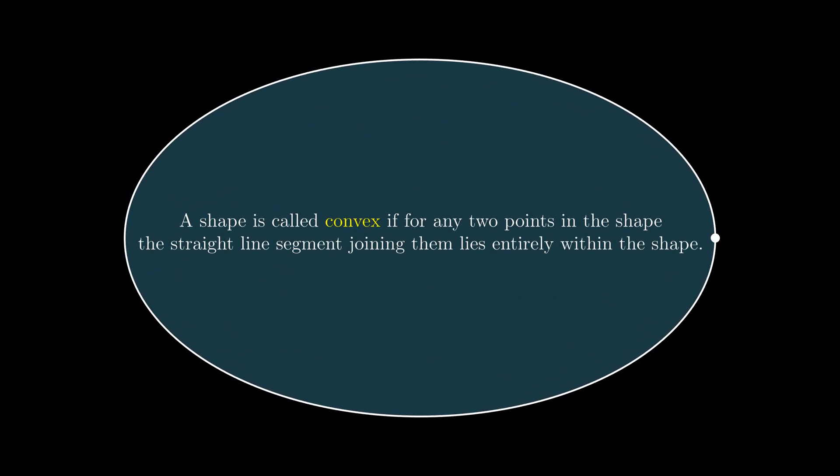Let's suppose that some closed curve of a fixed length encloses a region with the largest area. Try to understand how this plane figure works. Before asking the first question, I will remind you of the definition. A shape is called convex if, for any two points in the shape, the straight-lined segment joining them lies entirely within the shape. Do you think that the figure we are interested in can be non-convex?